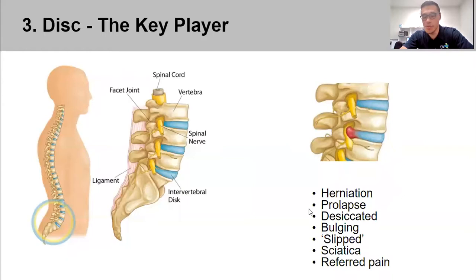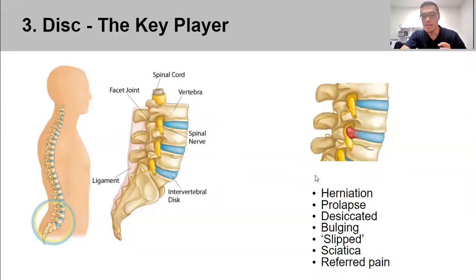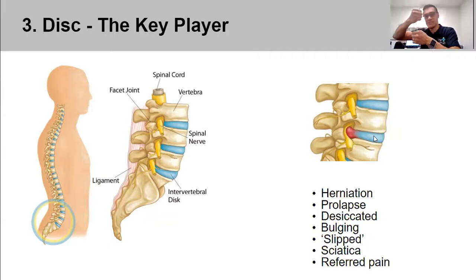The terms you may see in scans — disc herniation, disc prolapse, desiccated disc, bulging disc, slip disc, sciatica, referred pain — are all measurements of how much of a disc bulge there may be. When you bend forward or sit for long periods, you're pinching the front of the disc, forcing the jelly backwards, running out of durability in the fibrous glad wrap.